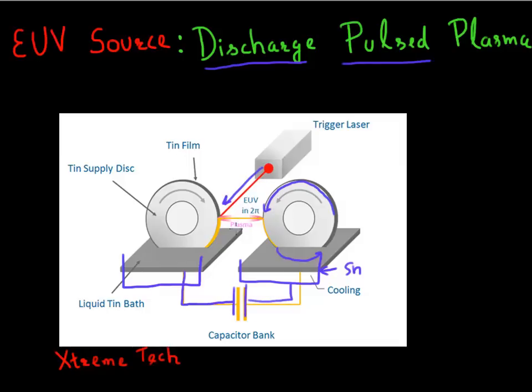And again, that generates tin in this excited state. And when it relaxes, you get these EUV photons. A company called Xtreme Technology is generating this competing technology for generating your EUV photons.